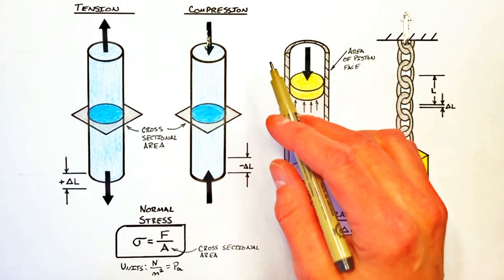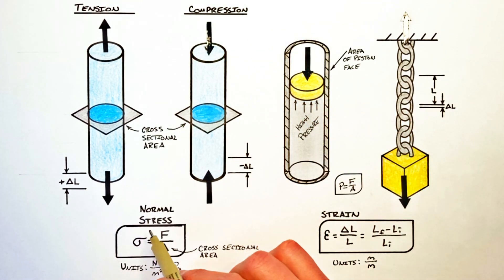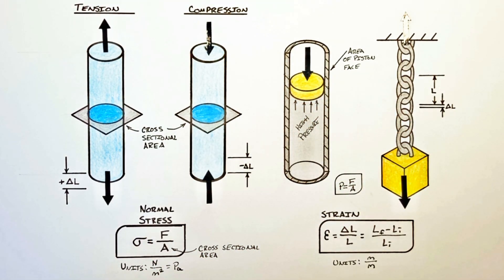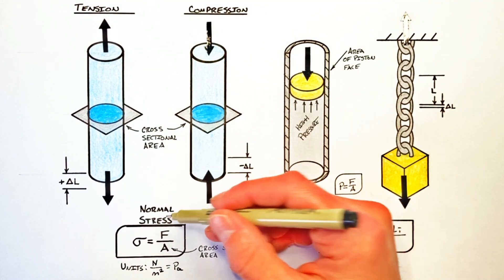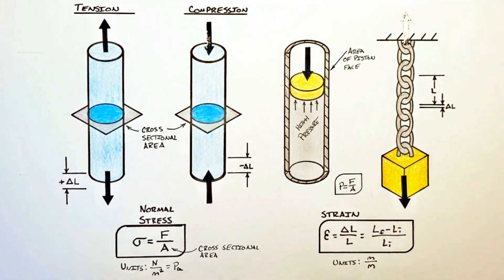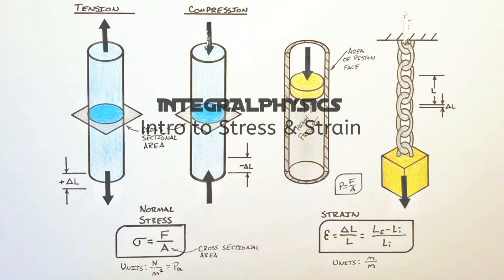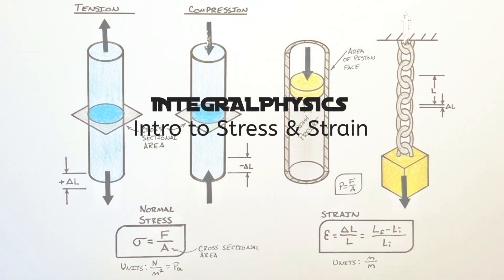In the future we're going to talk about how stress and strain relate to one another in something called the modulus of elasticity, or Young's modulus. But for now, this has been normal stress and strain. I hope you found this useful, and on that note, that's all for now.